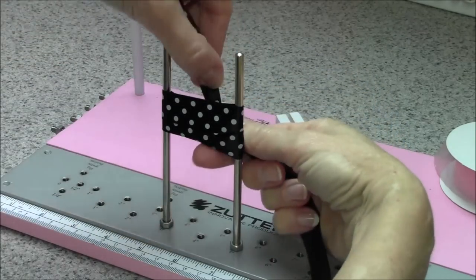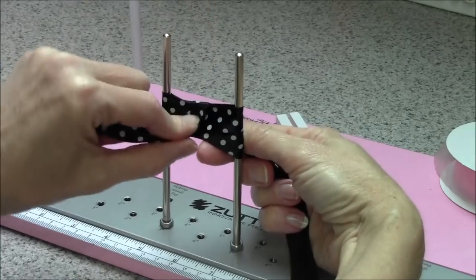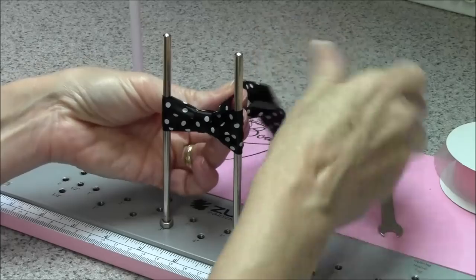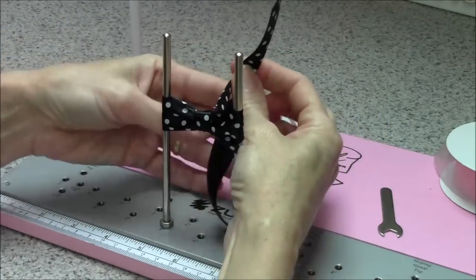The ribbon on my left is going to be the center of the bow, so I have it folded in half to give it a little lower profile and I'm going to go ahead and make my locking C knot.